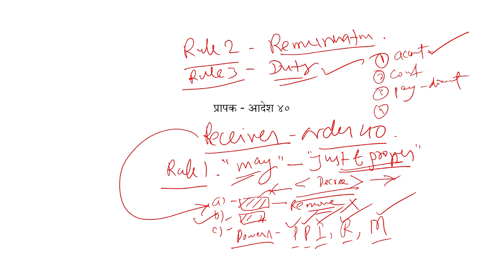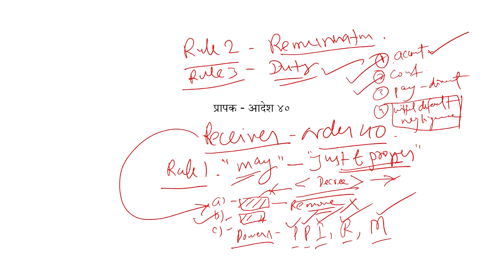Agar responsible for loss bhi hai — ya grass negligence karta hai, ya willful default karta hai — agar yeh willful default karta hai, ya negligence karta hai, toh yeh responsible bhi hoga. Willful neglect karta hai, willful default karta hai, ya negligence karta hai — toh iski duty: account maintain karna, court ko samay samay pe batana, court mein payment karna, aur willful default ya negligence mein responsible hona — yeh sari iski duty hai receiver ki. Yeh duty ko fulfill karayega.